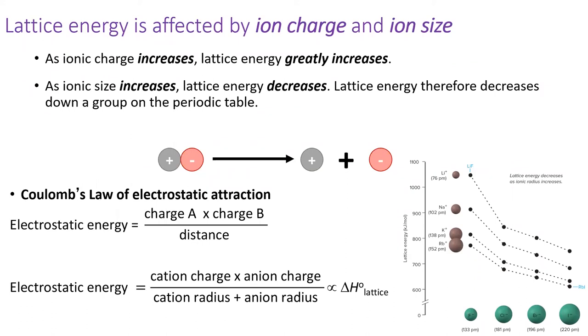The ion charges are multiplied together on the numerator, so ions with twice the charge pull on each other with four times the force. The distance between charges is on the denominator. Large ions have a larger separation between charges and a correspondingly lower lattice energy. This means that lattice energy decreases as we go down a row, as shown in the graph on the right.